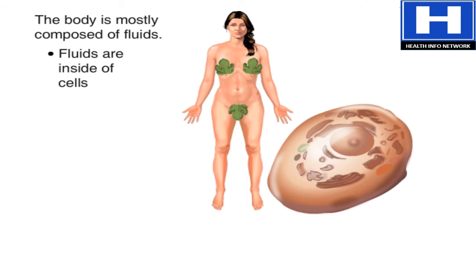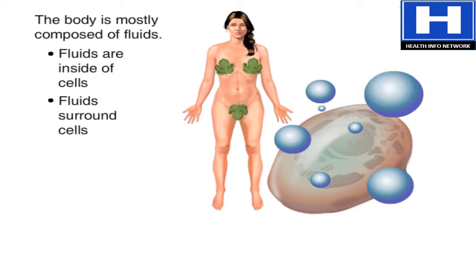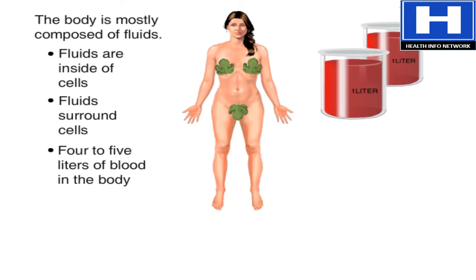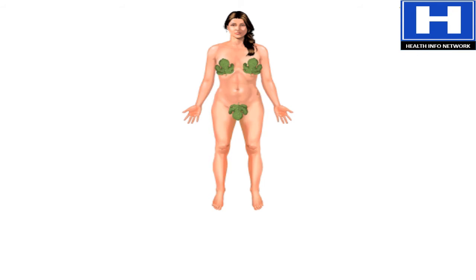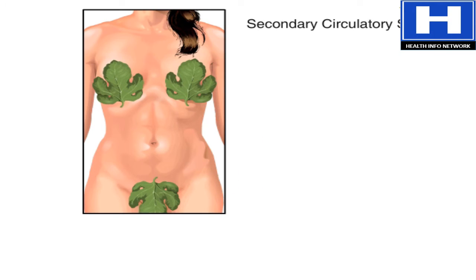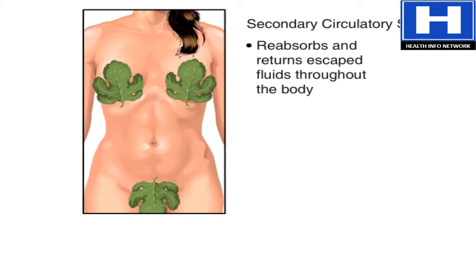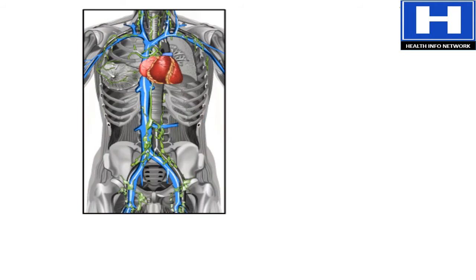The body is mostly composed of fluids. All its cells contain and are surrounded by fluids. In addition, 4 to 5 liters of blood circulate through the cardiovascular system at any given time. Some of that blood escapes from the system as it passes through tiny blood vessels called capillaries in the body tissues. Fortunately, there is a secondary circulatory system that reabsorbs escaped fluid and returns it to the veins. That system is the lymphatic system.